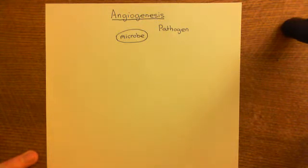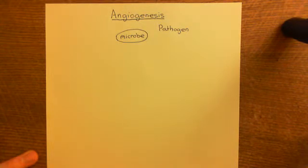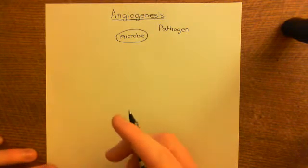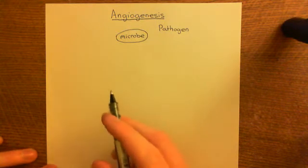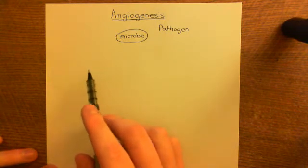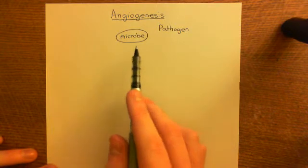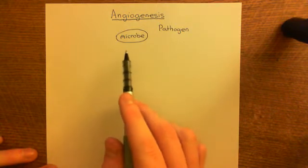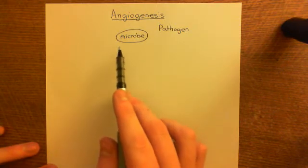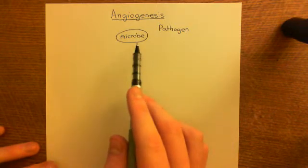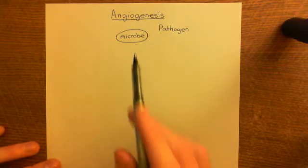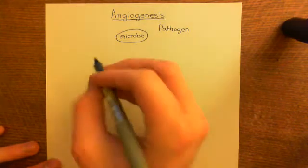Let's now discuss what the acute inflammatory response is, which is also known as the innate immune response. Before we do that, we need to discuss the three different types of blood vessel which will be in the interstitial fluid near where this microbe has infected.